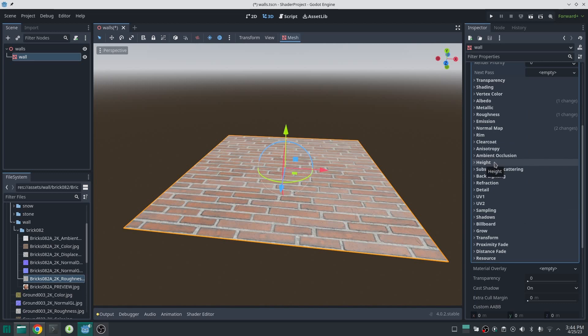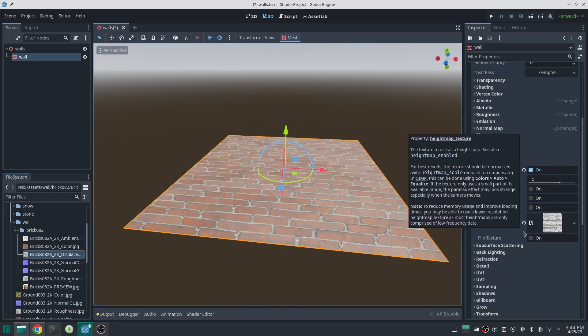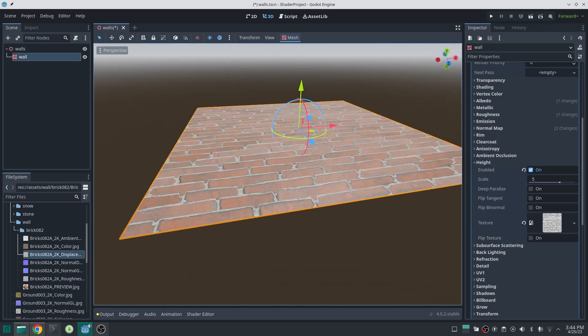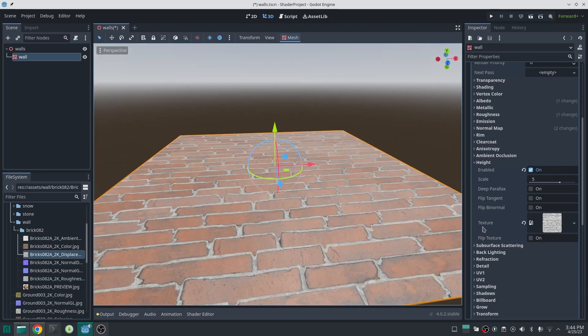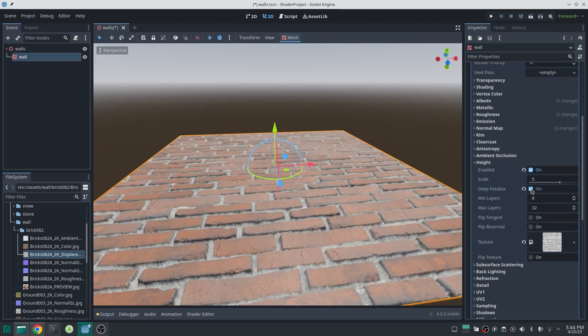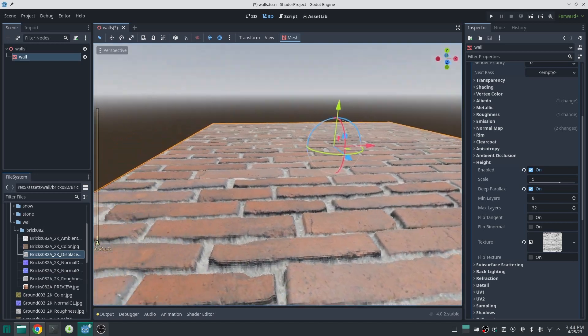After that, create a standard material and set albedo, normal map, and roughness. Then in the height map section, enable height map and in the texture section put your height map. In this case I will put my brick displacement texture. As you can see we have some changes but it is not good enough. Now if I activate deep parallax you can see we have a major change.